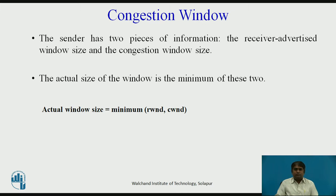In the previous session, we talked about flow control and discussed solutions when the receiver is overwhelmed with data. The sender window size is determined by the available buffer space in the receiver. In other words, it is only the receiver that can dictate to the sender the size of the sender's window. Here, we totally ignored another entity — the network. If the network cannot deliver the data as fast as it is created by the sender, it must tell the sender to slow down. The network is the second entity that determines the size of the sender's window.